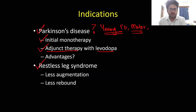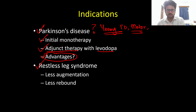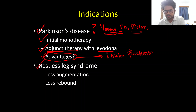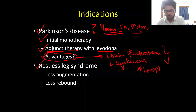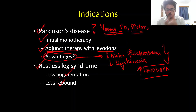Ropinirole can also be used as adjunct therapy with levodopa in Parkinson's disease. There is no debate — it is not as efficacious as levodopa, which is a far stronger anti-Parkinson's drug. However, the advantage of ropinirole and other dopamine agonists is that, due to their longer action on dopamine receptors, there is less incidence of motor fluctuations and less dyskinesia compared to levodopa. For restless leg syndrome, the augmentation and rebound phenomena are also less with dopamine agonists compared to levodopa.